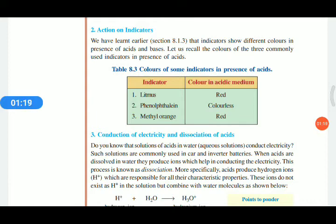The third property is conduction of electricity and dissociation of acids. Dissociation is the word opposite to association — association means combination and dissociation means separating out. We know acid is produced from two gases; for example, HCl is a gas — hydrochloric acid.